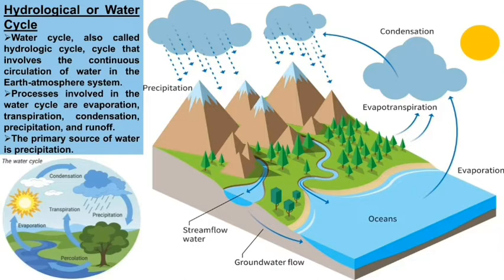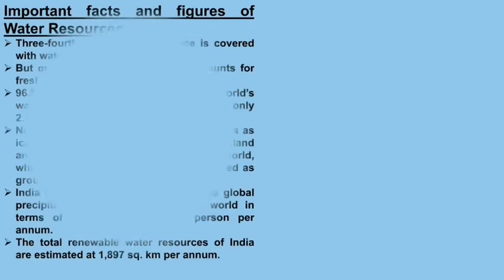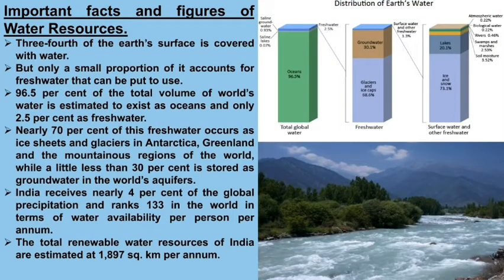After falling rain and snow on the land, that water starts flowing from higher slopes towards the oceans and seas with help of small streams and big rivers. Again, that water which has joined the oceans starts evaporating, and so on. The primary source of water is precipitation or rain.